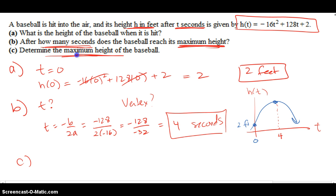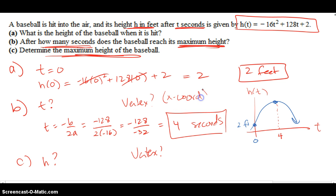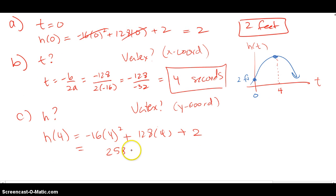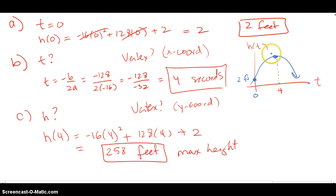Part C says determine the maximum height. In part B I was looking for seconds; in part C I'm looking for the height — the y coordinate of the vertex. I take the time when the maximum occurred, t equals 4, and plug it back into the function. Once I put 4 in for t, it spits out 258. So 258 feet is the maximum height the ball will ever reach — the ball starts at 2 feet, goes up, reaches 258 feet at 4 seconds, and then comes back down.